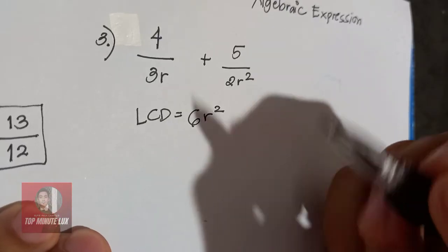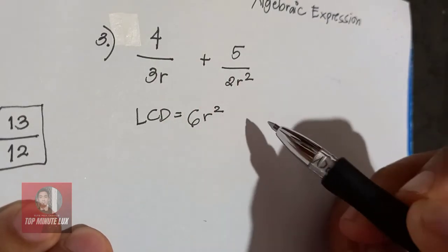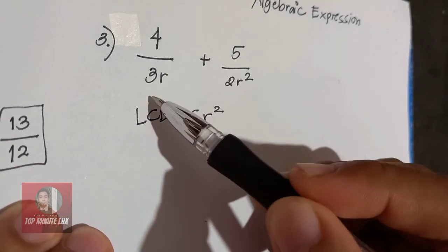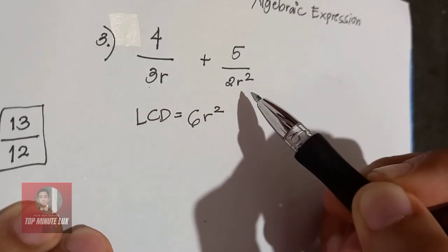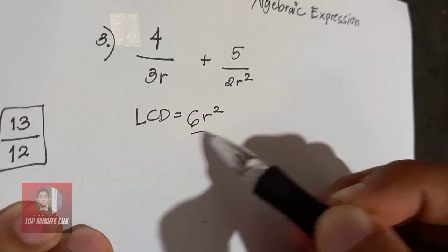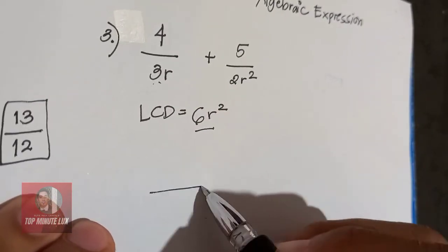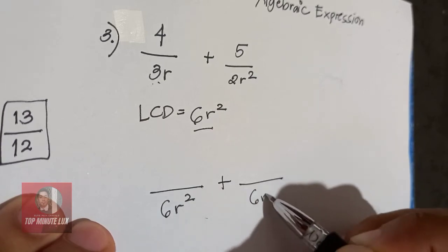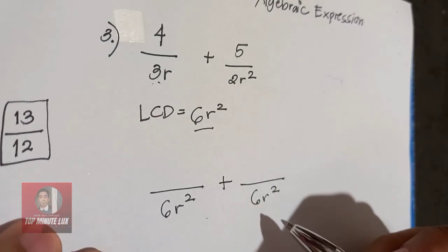Example number 3: 4 over 3R plus 5 over 2R squared. From the previous tutorial, we found that the LCD of 3R and 2R squared is 6R squared. Now, using the same process, write over 6R squared plus over 6R squared to make it a similar rational algebraic expression.